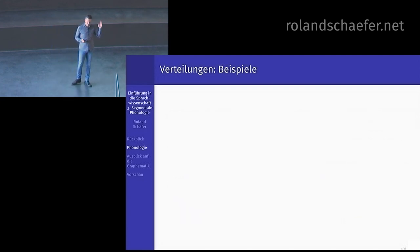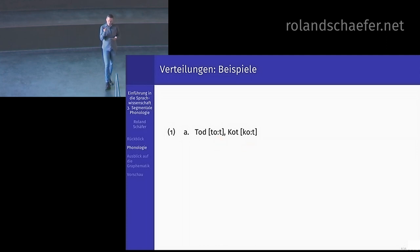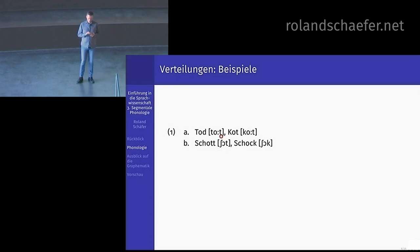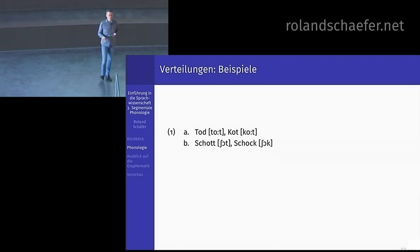Fangen wir mit etwas Einfachem an. Wenn wir wissen wollen, was eine Verteilung ist, gucken wir uns Wortpaare an: Tod und Kot, Schott und Schock. Was sehen wir hier? Am Wortanlaut — einsilbige Wörter, also am Silbenanlaut — sehen wir ein T und ein K. Die können da beide vorkommen. Sie können eine Silbe anfangen mit T oder K im Deutschen, und auch aufhören: Schott oder Schock. Das heißt, K und T können beide am Silbenanfang und am Silbenende vorkommen.